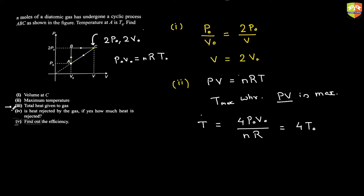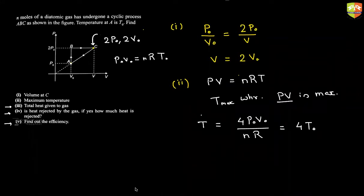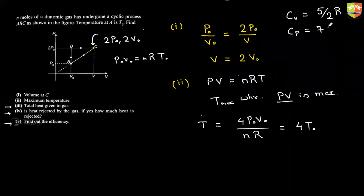Please solve parts 3, 4, and 5 yourself — we'll work through this one numerical only today. You can use Cp and Cv. For a diatomic gas, Cv = 5R/2 and Cp = 7R/2.